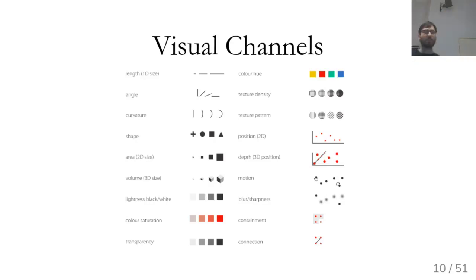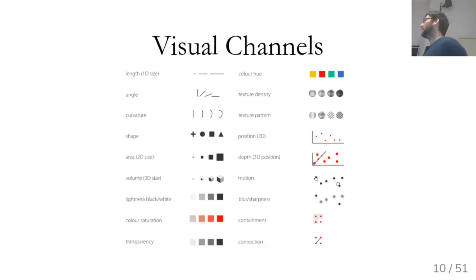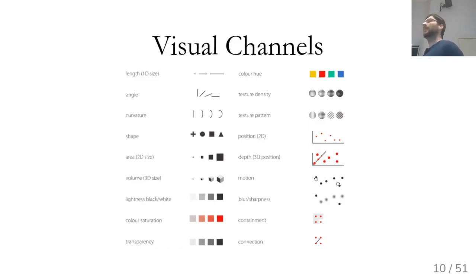You could actually come up with even more of them, but if you look at any standard visualization, you can usually think of it as mapping some aspect of the data to one of these things. So one aspect might be mapped to angle, area, color, the x-axis, or the y-axis.